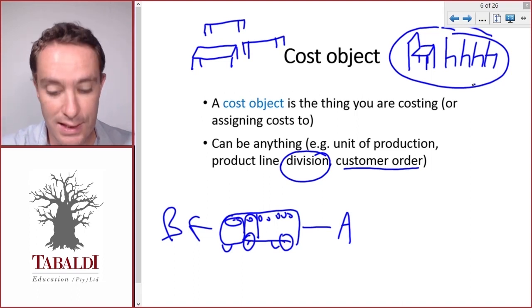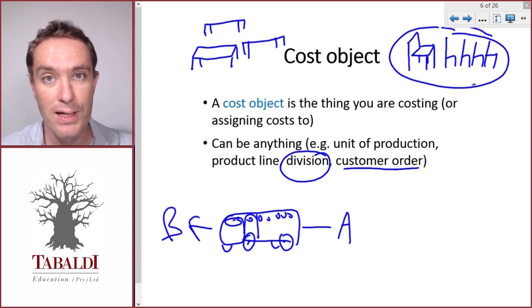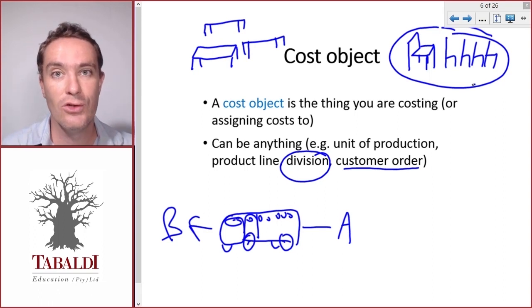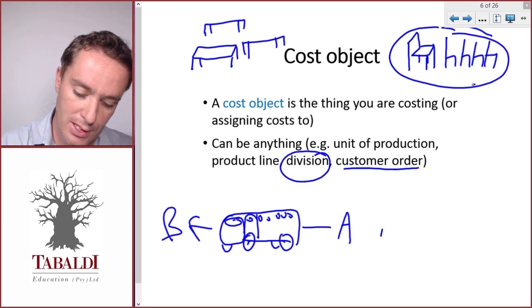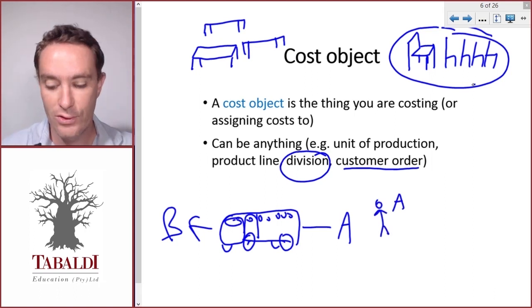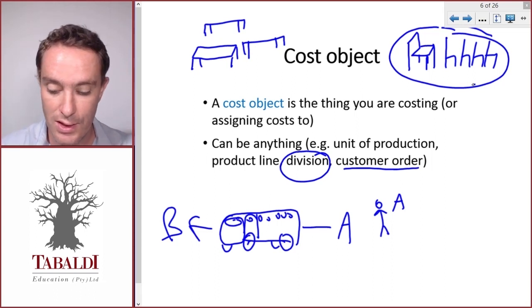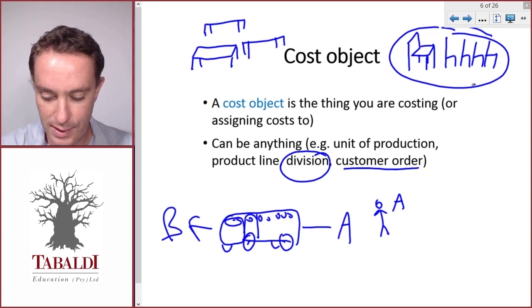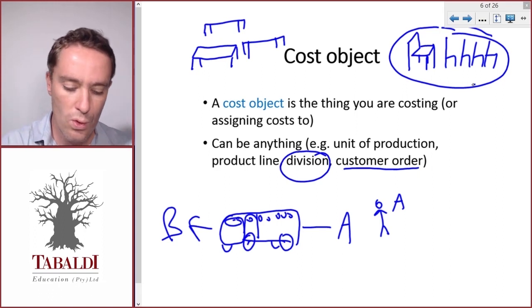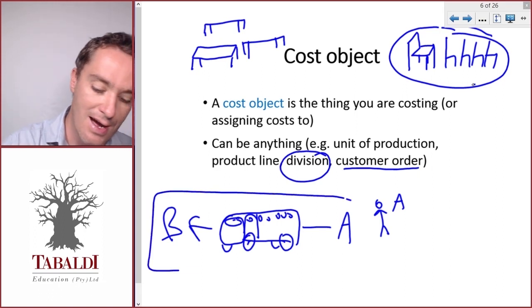When you buy a ticket to get on the bus, that ticket or the passenger could be a cost object. Let's call this Passenger A—that could be a cost object for the bus company. How much did it cost us to get Passenger A from Point A to Point B? Or the whole bus ride—